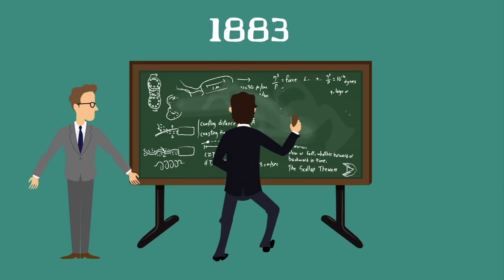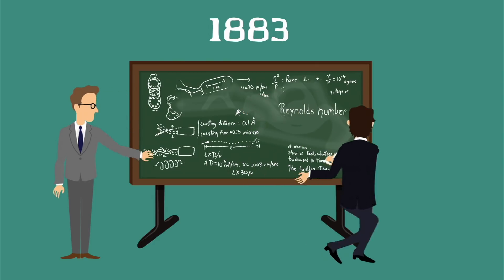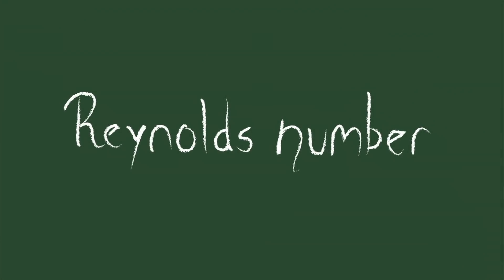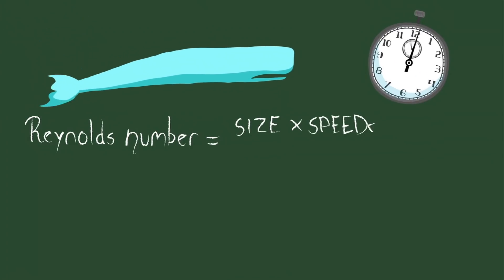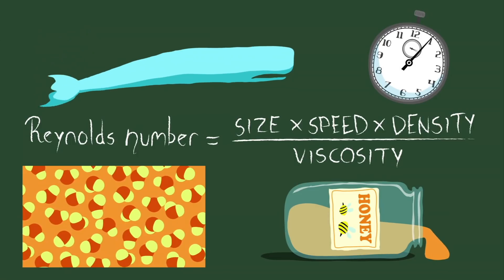In 1883, the physicist Osborne Reynolds figured out that there is one simple number that can predict how a fluid will behave. It's called the Reynolds number, and it depends on simple properties, like the size of the swimmer, its speed, the density of the fluid, and the stickiness, or the viscosity, of the fluid.